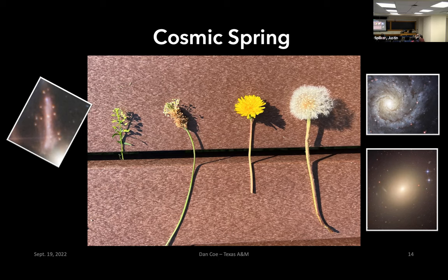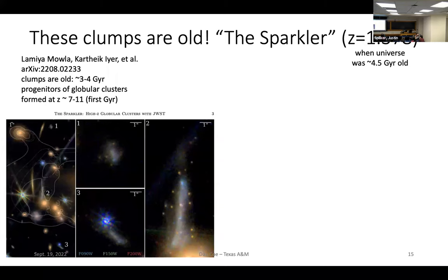It turns out cosmic spring was wrong for a couple of reasons. Number one, we already have 'cosmic dawn' — we don't need a new name. And also, it turns out these clumps might not be young. The first paper analyzing this cool galaxy said these clumps are really old — three to four billion years old — and named this galaxy the Sparkler. They said these are like globular clusters, precursors to globular clusters, really old star clusters that formed in the first billion years of the universe as bound clusters that have survived a long time.